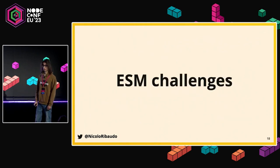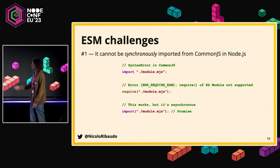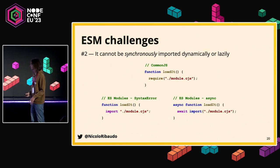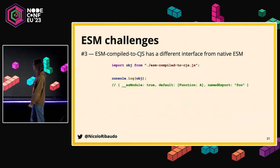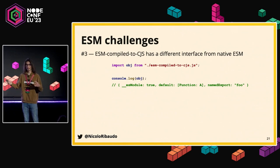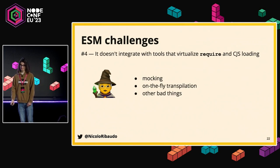ESM comes with challenges. The most obvious is that it cannot be synchronously imported from CommonJS — you can't use require() on an ESM file; it throws. You can use dynamic import(), but it returns a Promise, which is different from how require() works. As a consequence, you cannot import ESM synchronously or dynamically load files before knowing their path. Also, ESM compiled to CommonJS behaves differently from native ESM in Node.js — importing the default value of a compiled library often shows an unexpected object with a 'default' property.